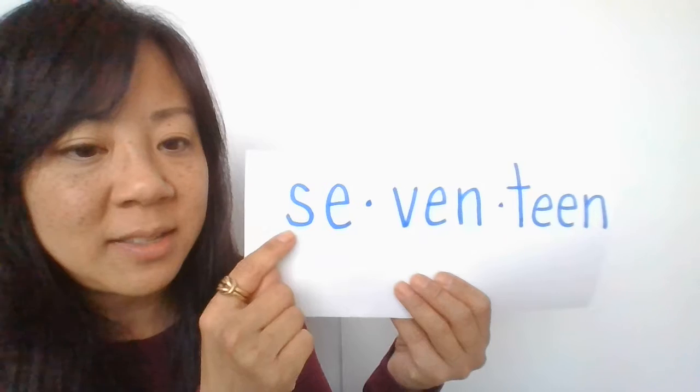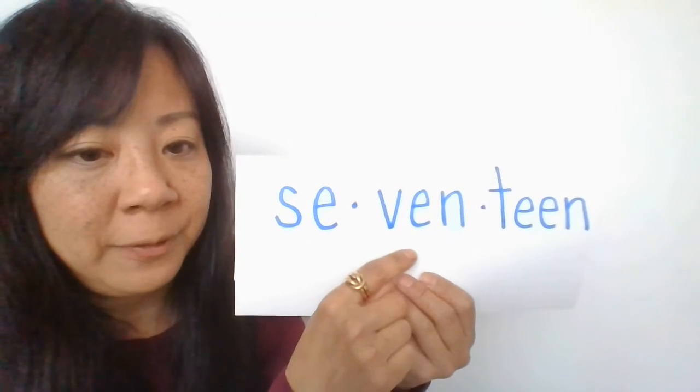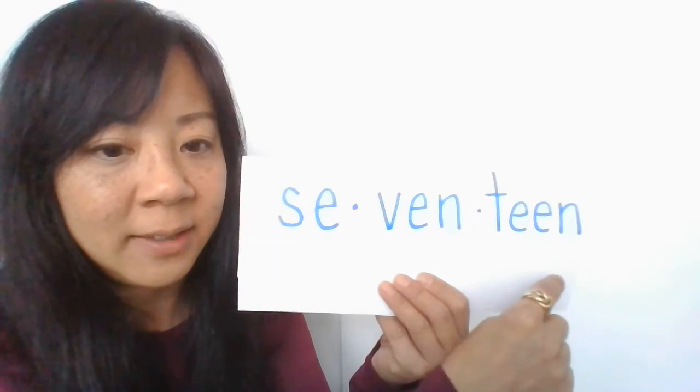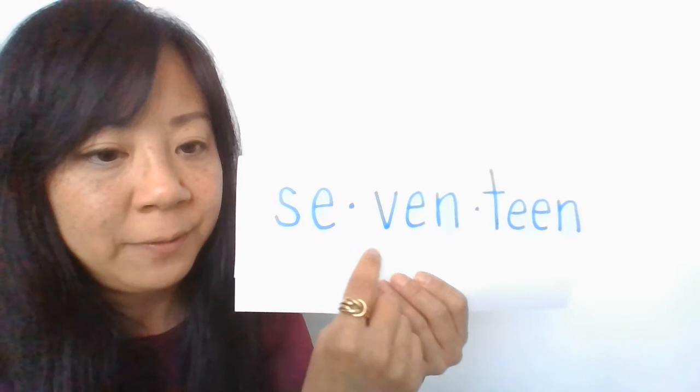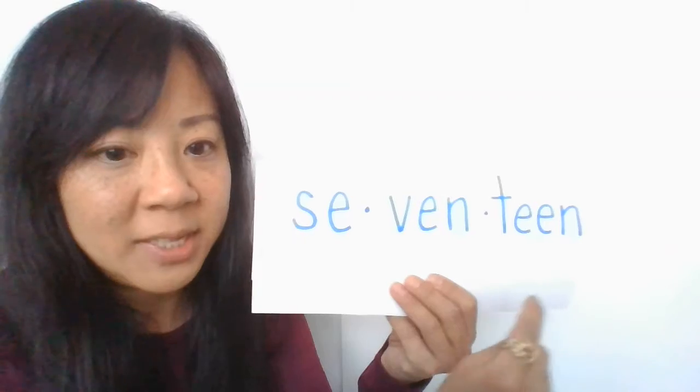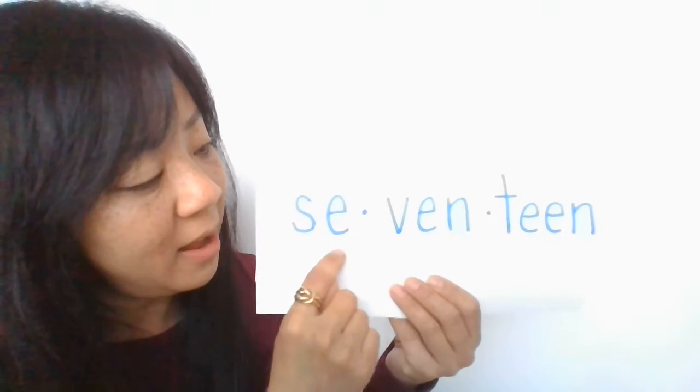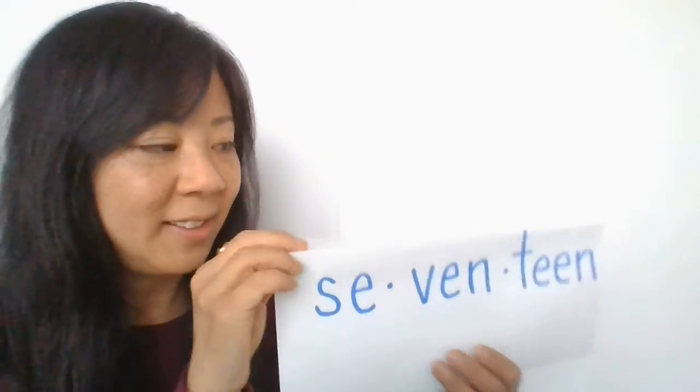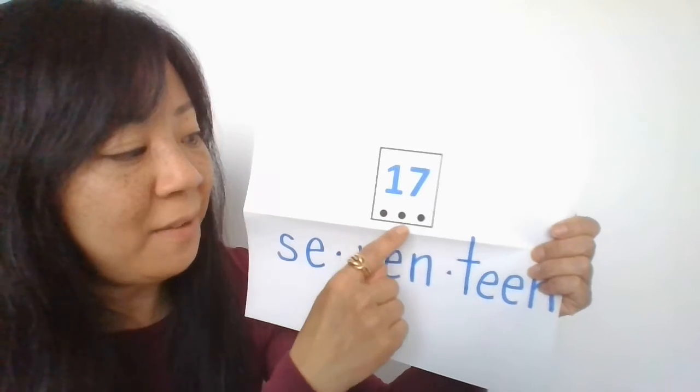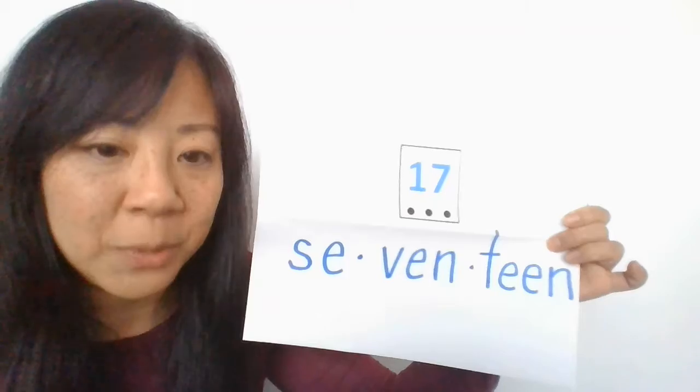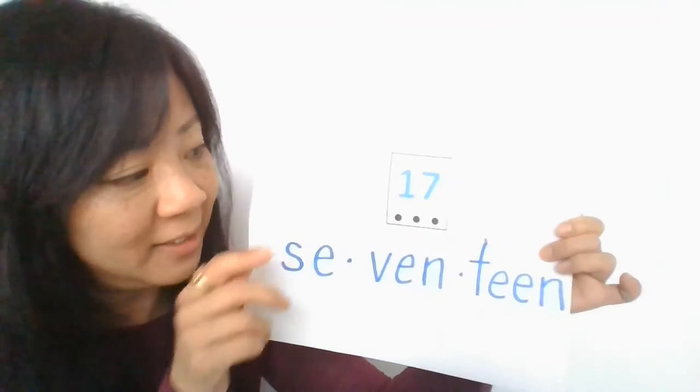Okay. Here we go. Here's another one. Ready? Se-ven-teen. Se-ven-teen. What does that sound like? One more time. Se-ven-teen. Do you hear that? Se-ven-teen. That's the number seventeen. Seventeen. Good.